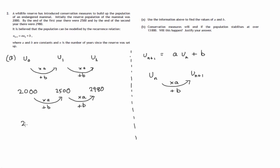So starting with 2,000, multiply by A, add B, will end up with 2,500. If we start with 2,500, multiply by A, and add B, we'll end up with 2,980. And as you can see, we've got simultaneous equations, two unknowns.